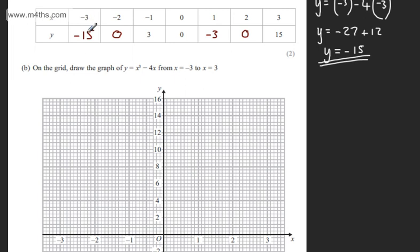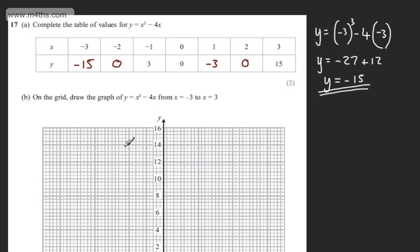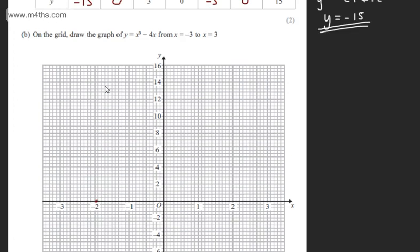So when x equals minus 3, y equals minus 15. So x is minus 3, y equals minus 15, that's just there. When x equals minus 2, y equals 0, so minus 2 comma 0 is just here. When x equals minus 1, y equals 3, so minus 1, 3 is here.